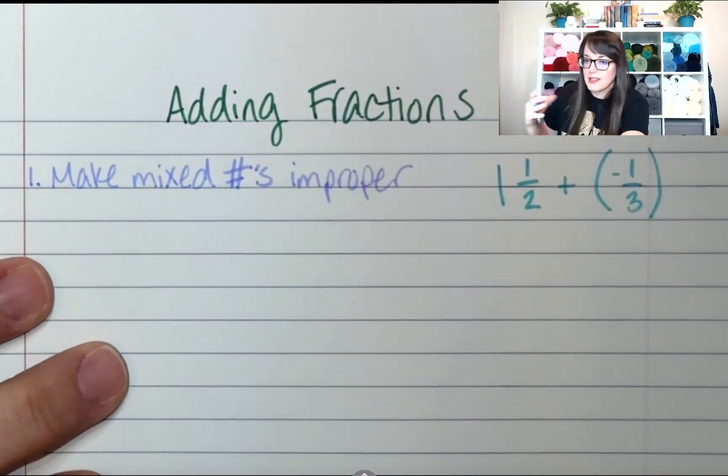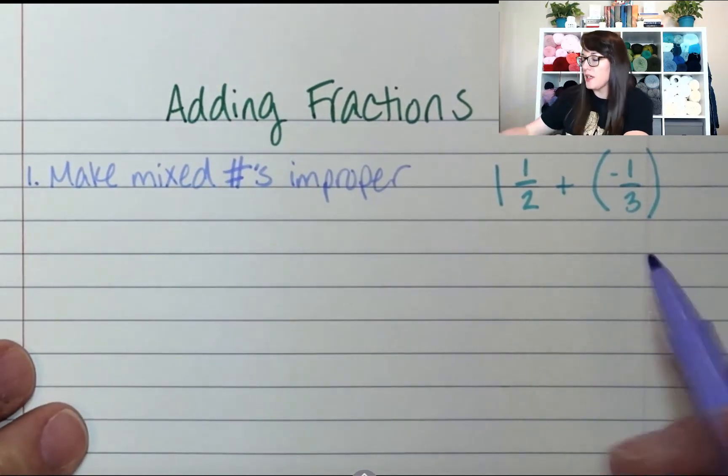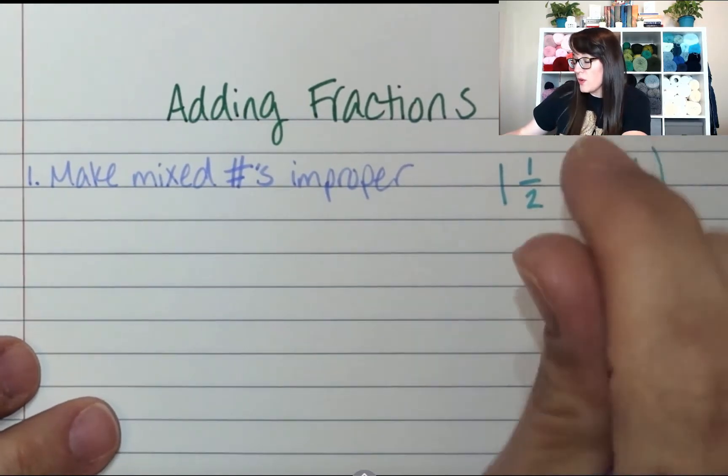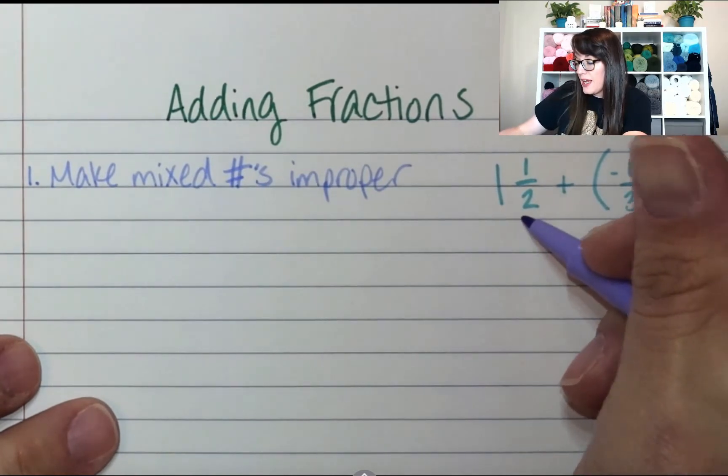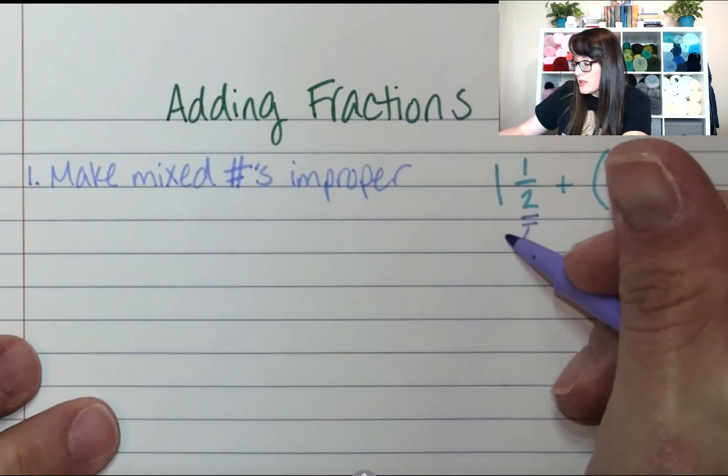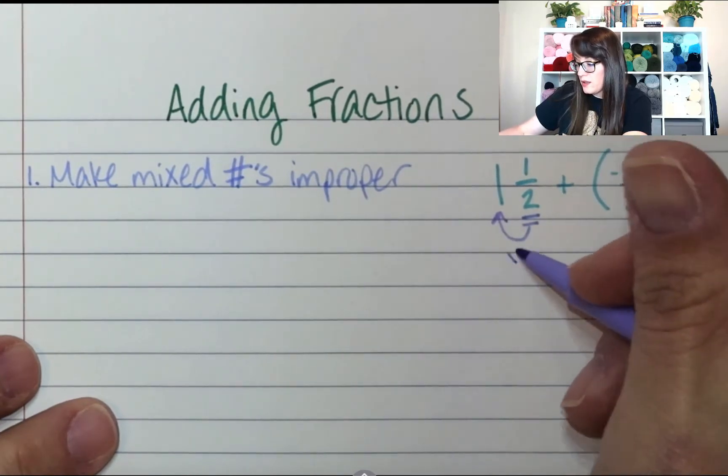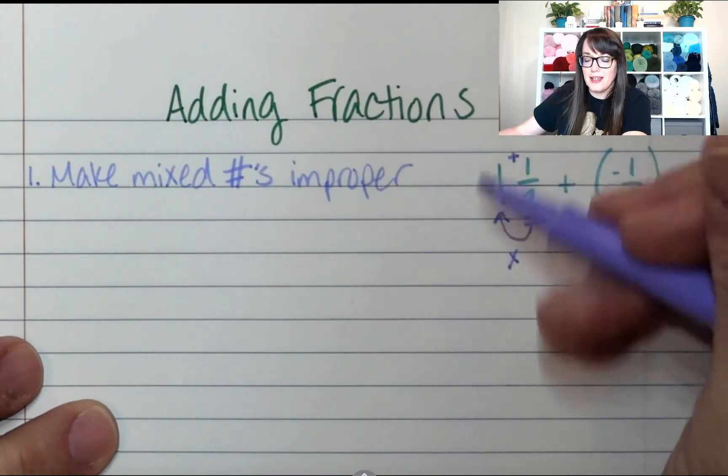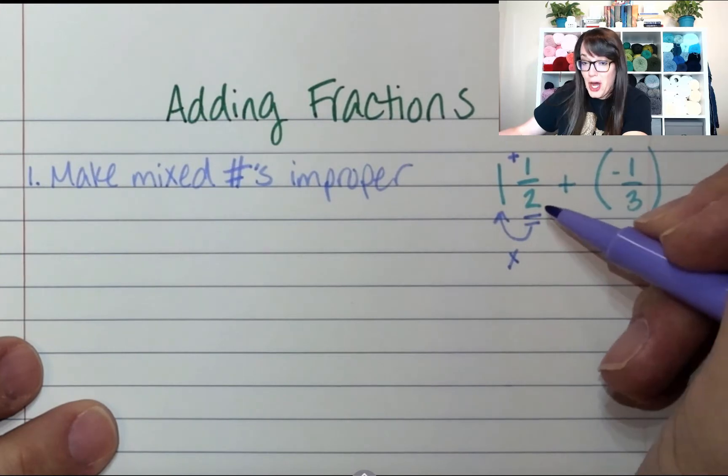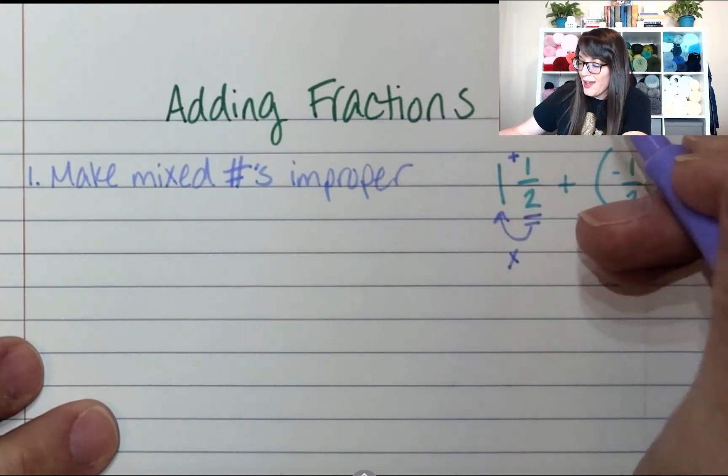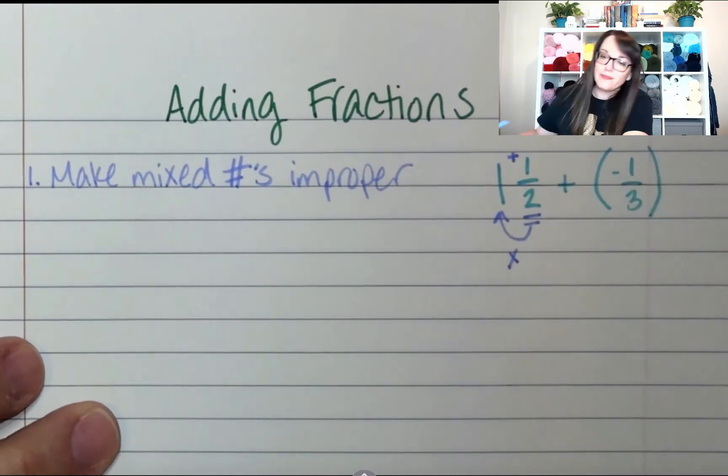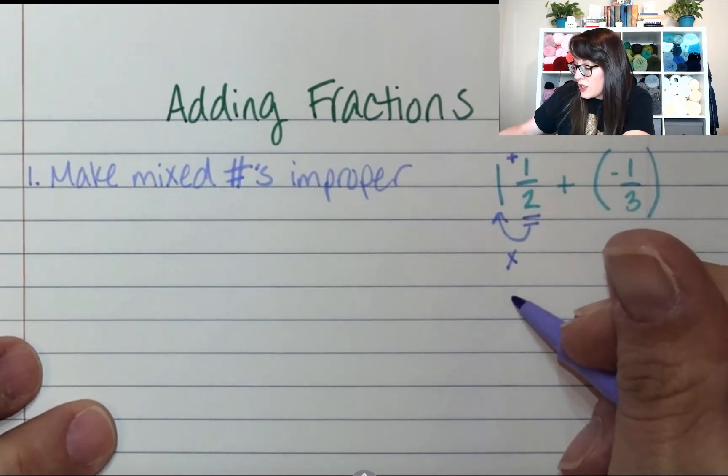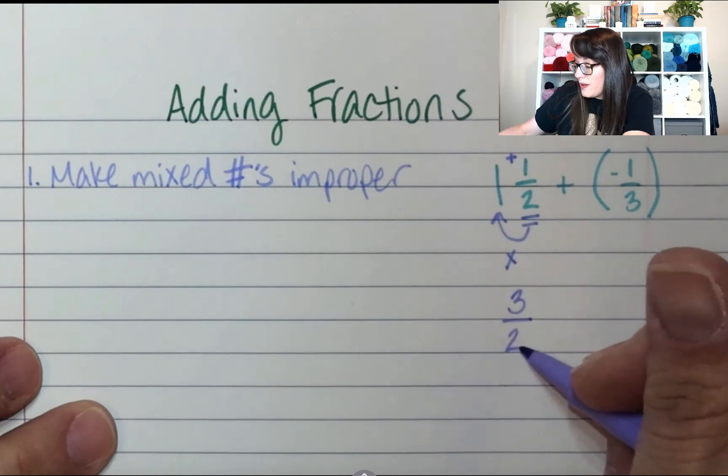And that's because it's gonna keep us from having to do that borrowing thing that everybody messes up on. If you're good with borrowing and you remember how to borrow, you can use that. So, to make something improper, I take the denominator, I multiply it by the whole number, then you add the numerator. So, two times one is two, plus one is three, and I keep the denominator.